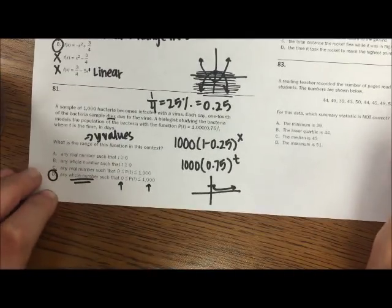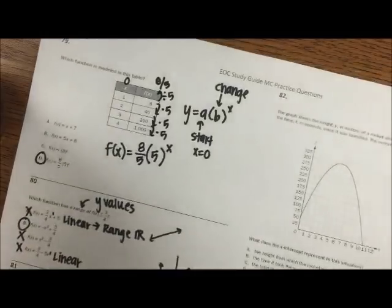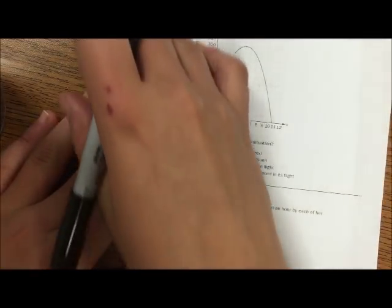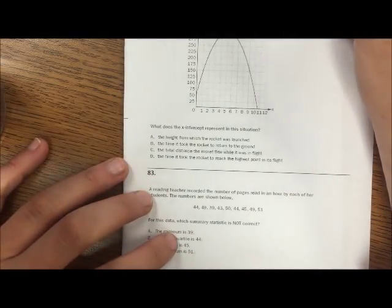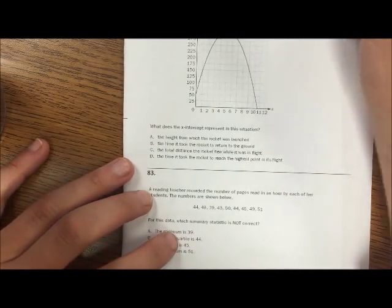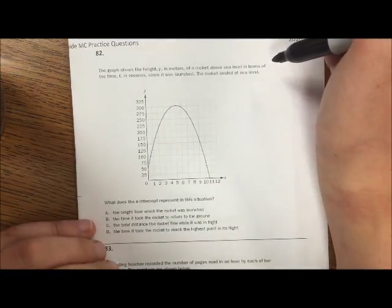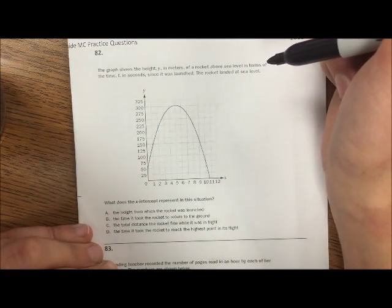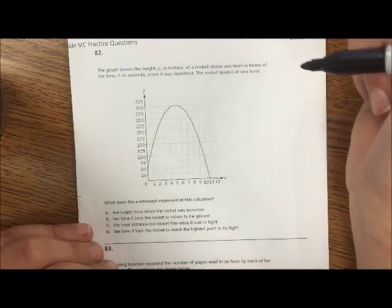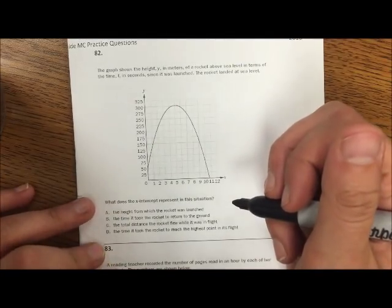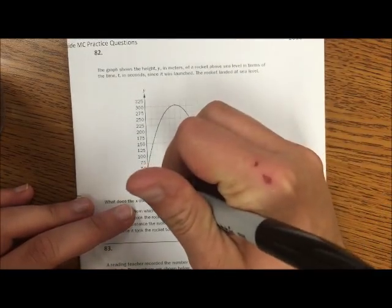Alright, 82: The graph shows the height y in meters of a rocket above sea level in terms of the time t in seconds since it was launched. The rocket landed at sea level. So what does the x-intercept represent in this situation? So an x-intercept is where it crosses the x-axis.